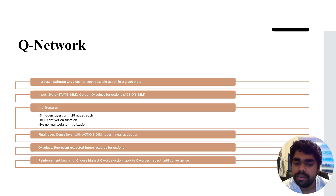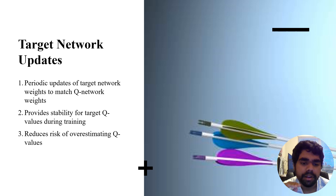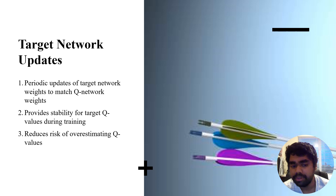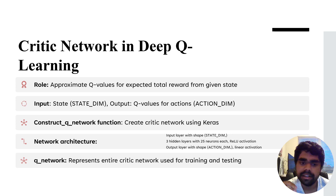Q-values represent the expected future rewards for each action. In reinforcement learning, we choose the highest Q-value action, update the Q-value, and repeat until convergence. We periodically update the target network after each episode to match the Q-network weights. This provides stability during training, so that over-estimation or excessive reliance on exploration is avoided.